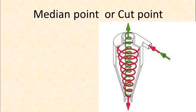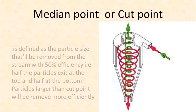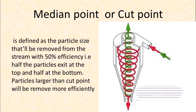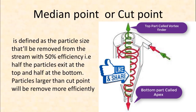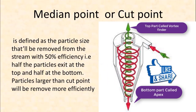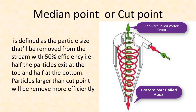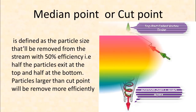Median point or cut point is defined as the particle size that will be removed from the stream of the feed with 50% efficiency. An example: half of the particle exit at the top and half at the bottom. Particles larger than the cut point will be removed more efficiently, whereas particles less than the cut point will be removed less efficiently.